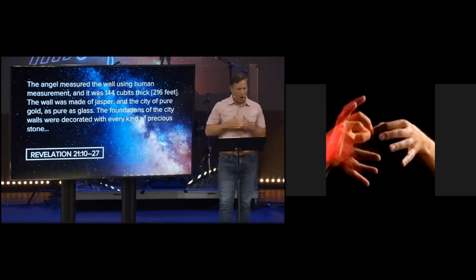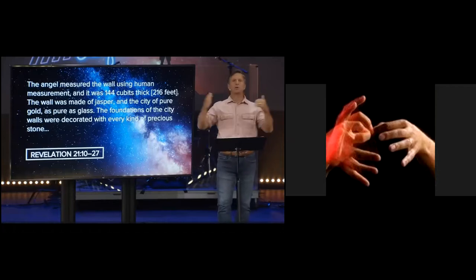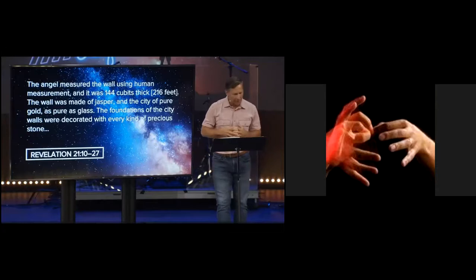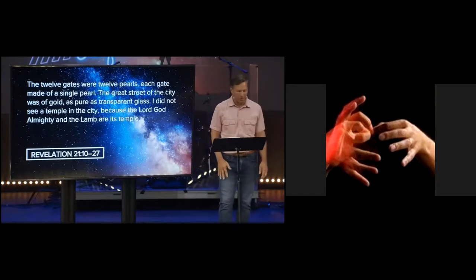The angel measured the wall using human measurement. And it was 144 cubits or 216 feet thick. The wall was made of jasper and the city of pure gold, but as pure as glass. The foundations of the city walls were decorated with every kind of precious stone. The 12 gates were 12 pearls, each gate made of a single pearl. And the great street of the city was gold, but as pure as transparent glass.